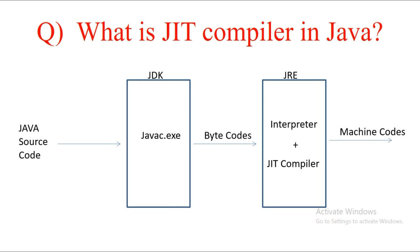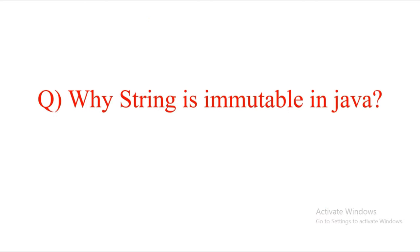The JIT compiler is used to convert your bytecodes into machine codes. If you still have doubts, let me know in the comment section.